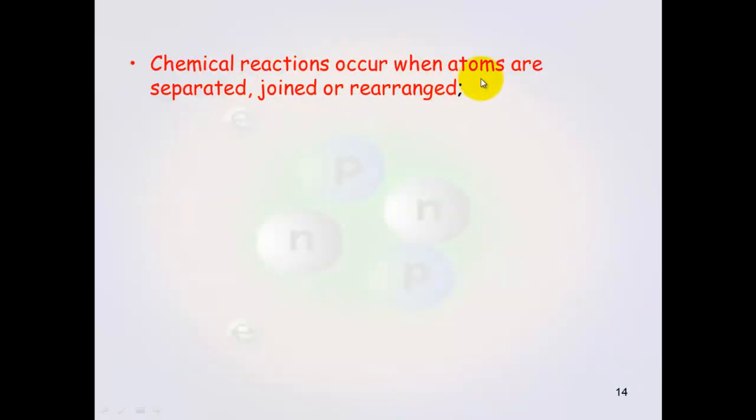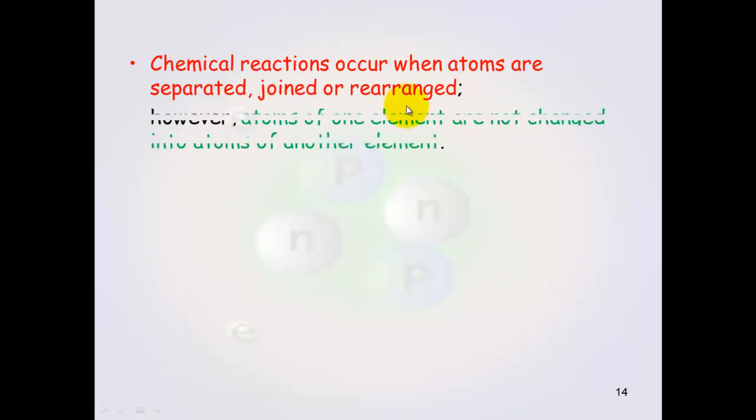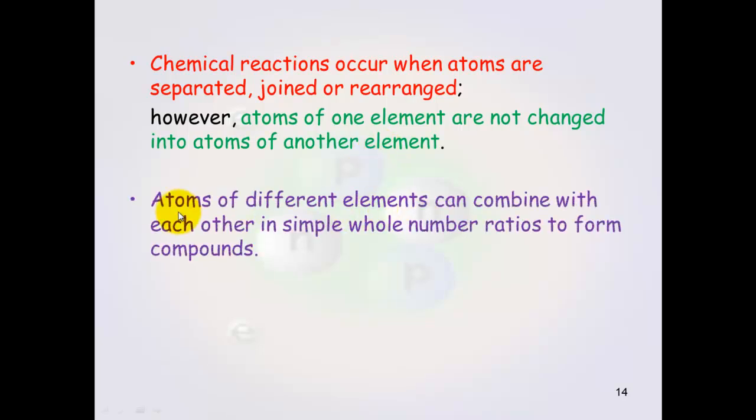Chemical reactions occur when atoms are separated, joined or rearranged. However atoms of one element are not changed into atoms of another element. So that was against what the alchemists thought could happen. Atoms of different elements can combine with each other in simple whole number ratios to form compounds.